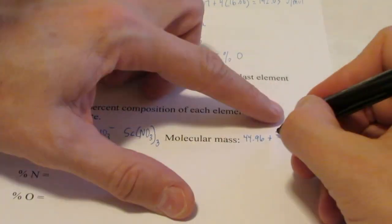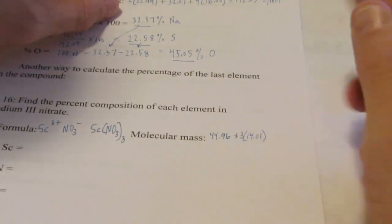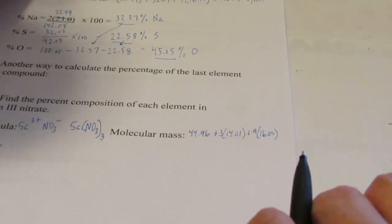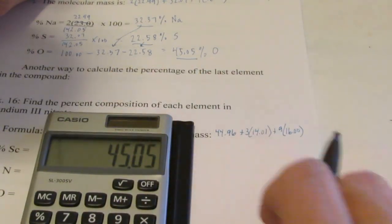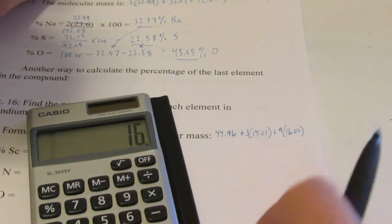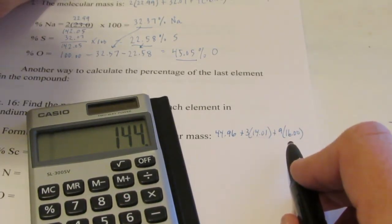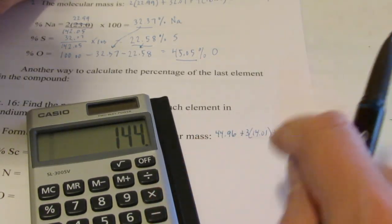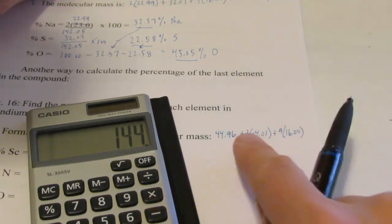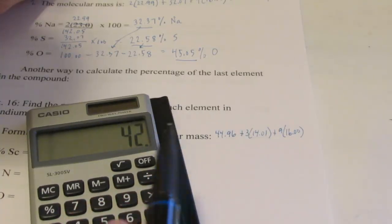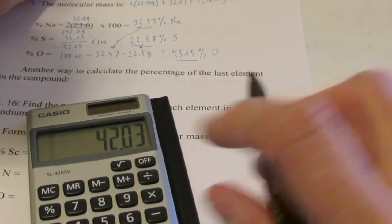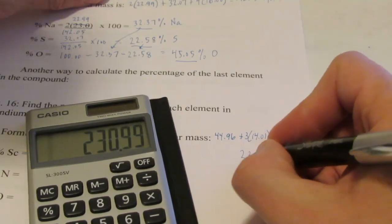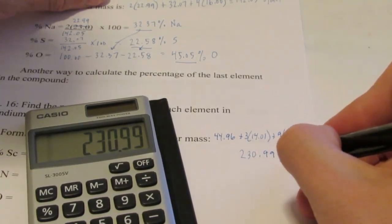So scandium is 44.96 grams per mole. I have three nitrogens at 14.01 each, and nine oxygens at 16.00 each. Nine times 16.00 gives 144 from oxygens. Three times 14.01 is 42.03 from nitrogen. Plus scandium at 44.96. So the molecular weight is 230.99 grams per mole.